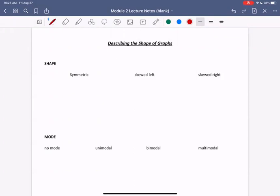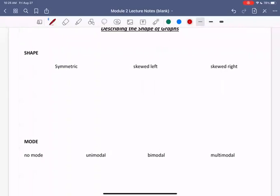So first of all, shape of a graph. There are three main types of shapes that we'll see in this class: symmetric, skewed left, and skewed right.